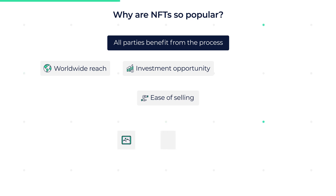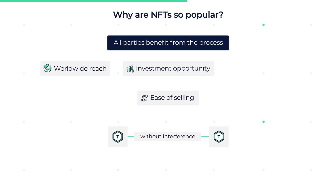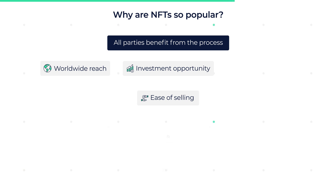Ease of selling: traditionally, if you wanted to sell an exclusive or one-of-a-kind physical or digital asset, you would have to use a middleman service. This process takes time and costs transaction fees, middleman fees, and buyer fees. Ownership was then verified by a certificate stating the name of the owner. NFTs change all that because ownership can now easily be transferred online without an expensive middleman service. NFT marketplaces still serve as a middleman, but anyone can tokenize a digital item and sell it without a difficult or time-consuming process, giving artists and sellers access to a global audience.